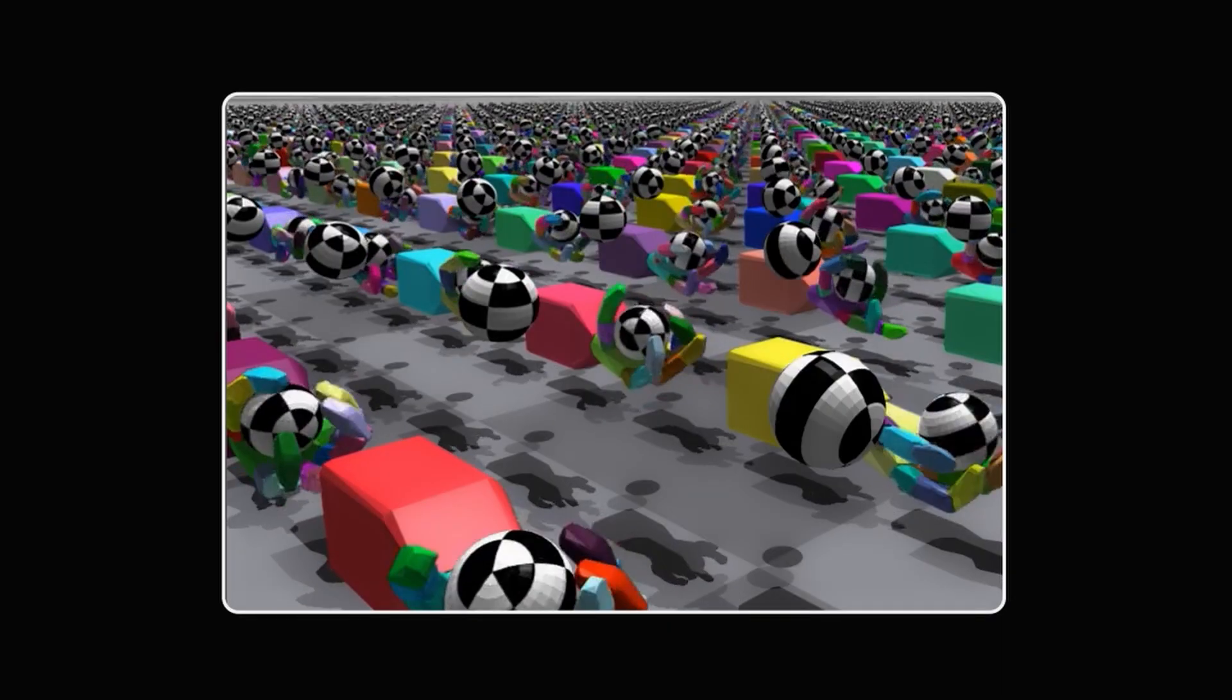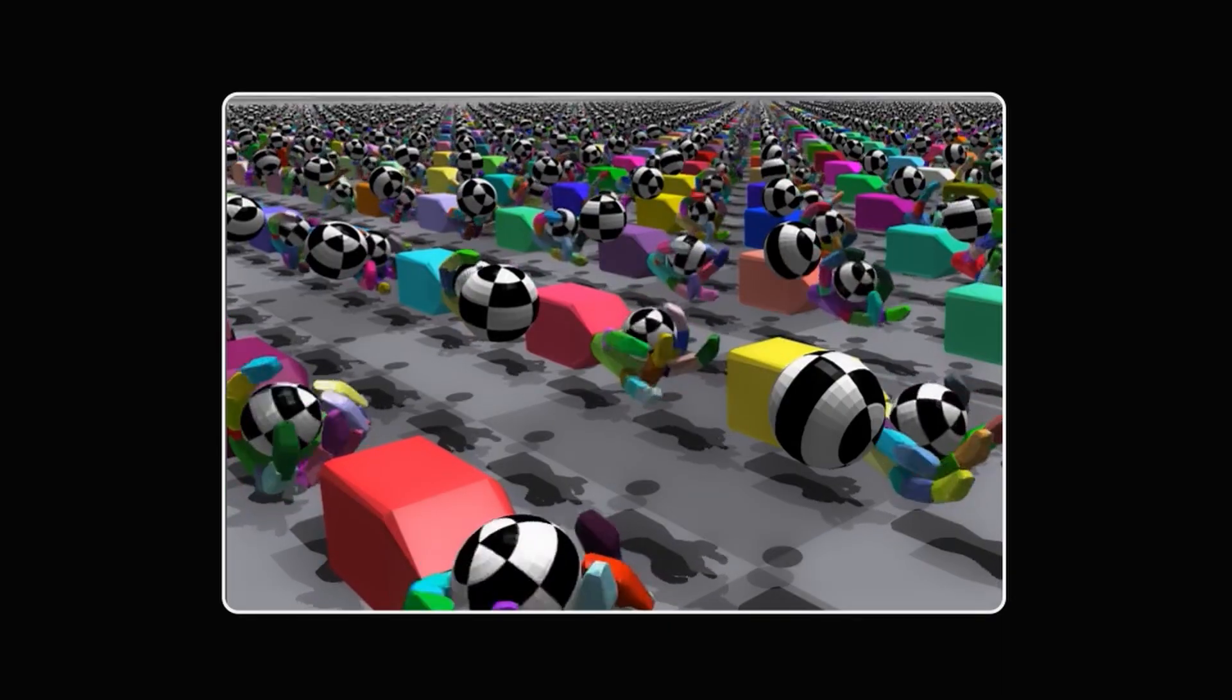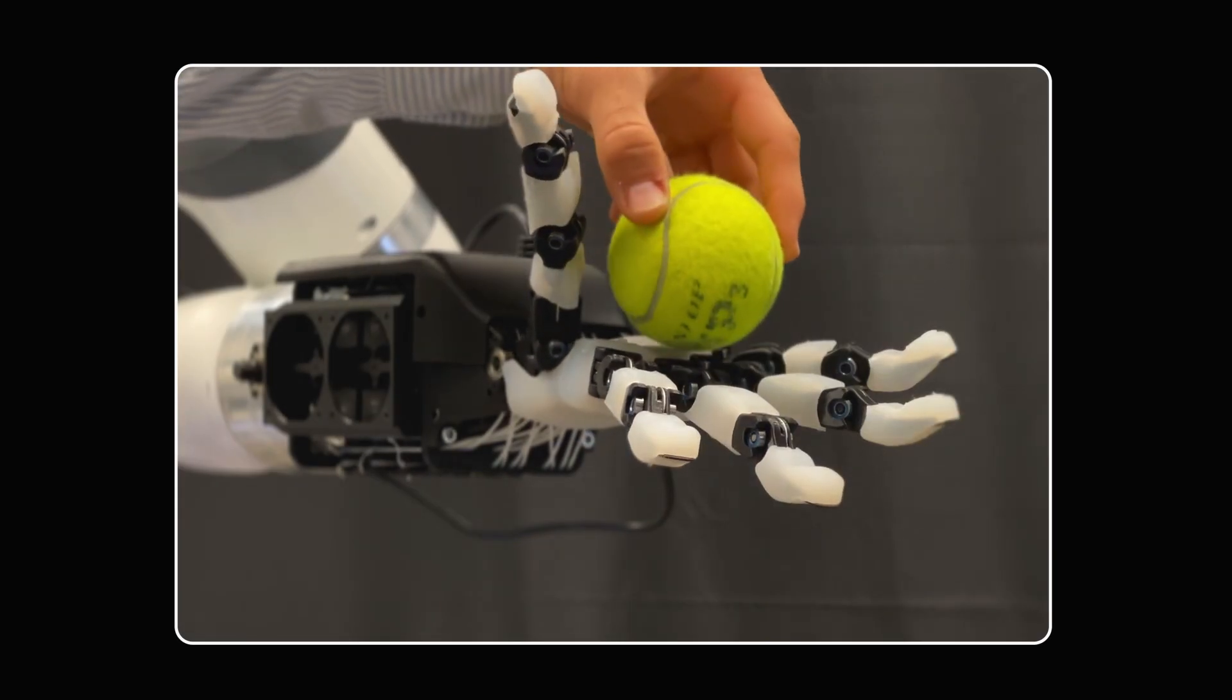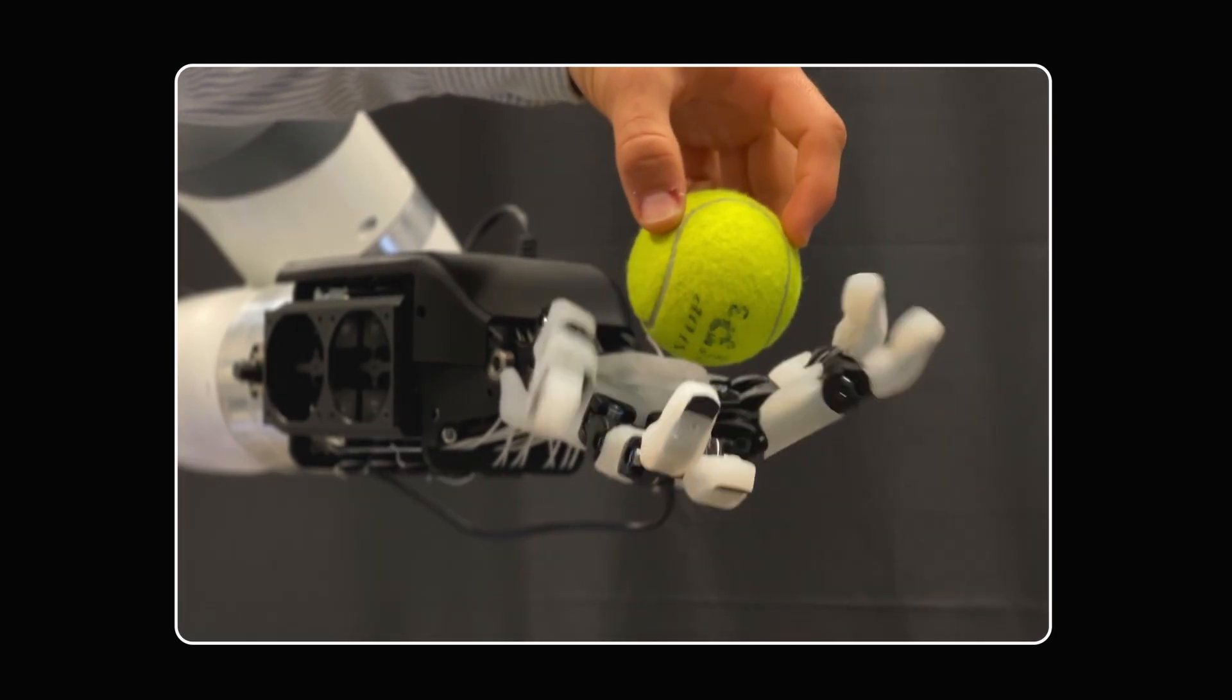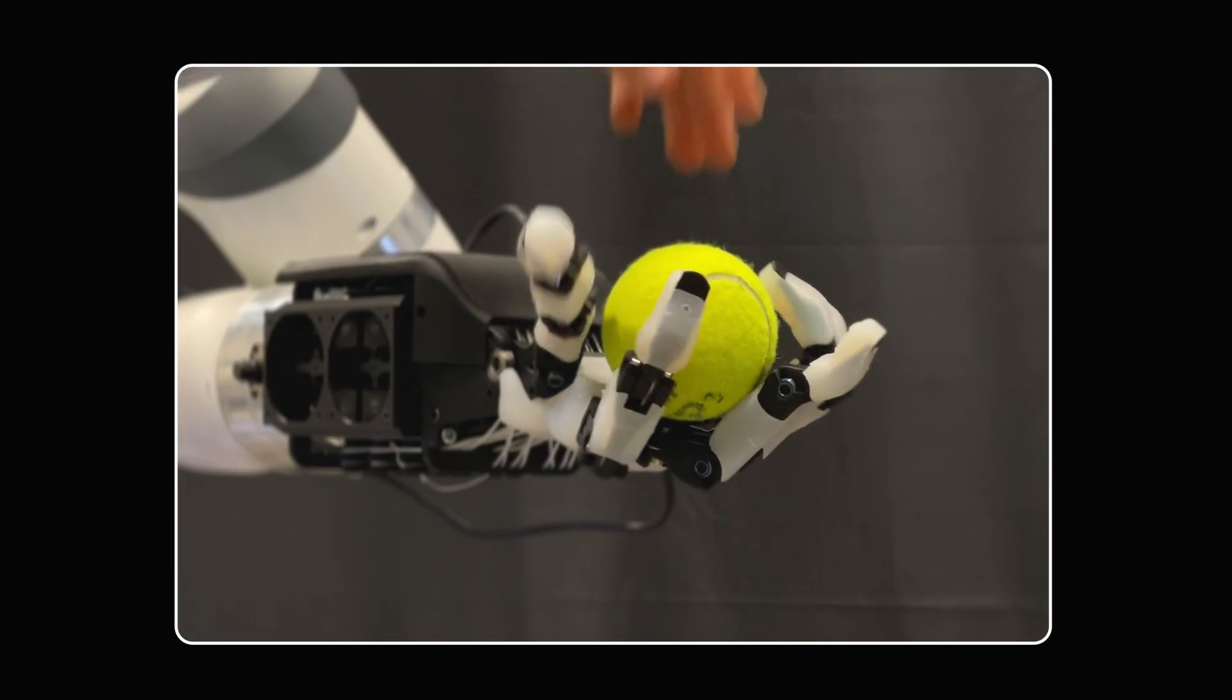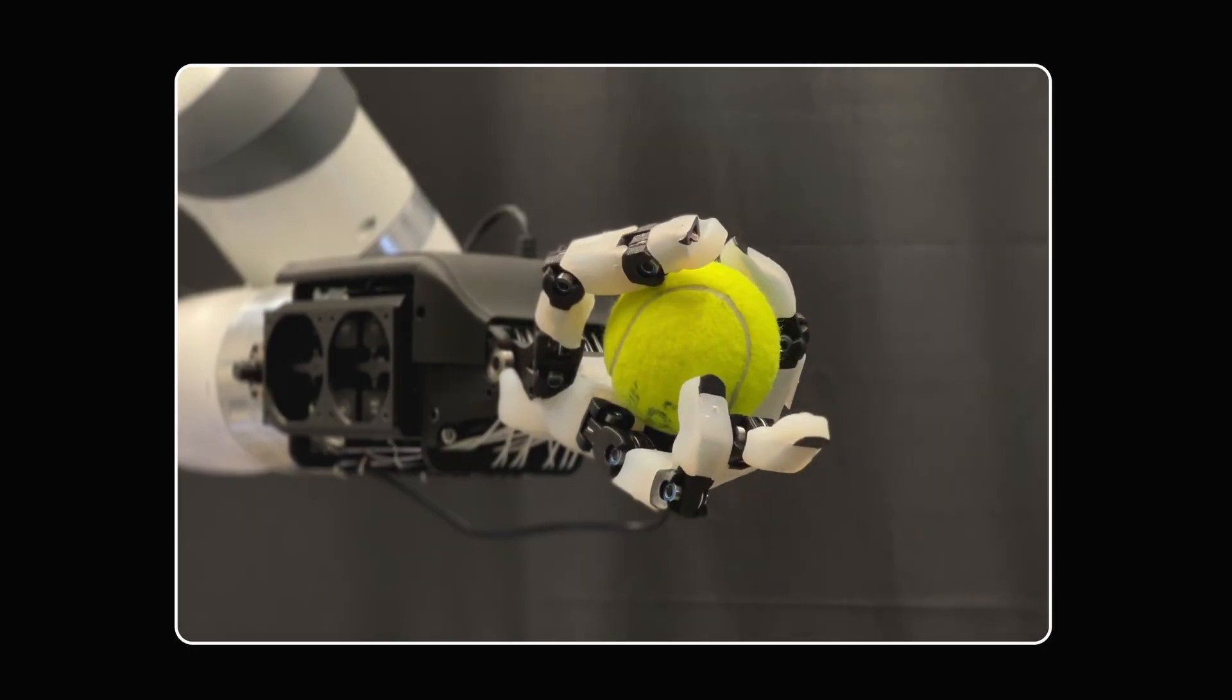Lastly, we trained the hand with reinforcement learning, which can be useful for tasks that are hard to perform yourself. After a 1-hour training epoch, we could deploy a robust policy that allowed us to reorient a tennis ball with the Orca hand.